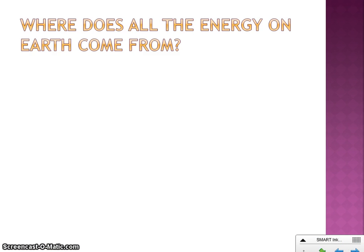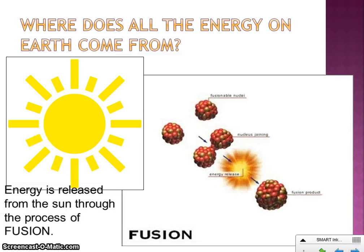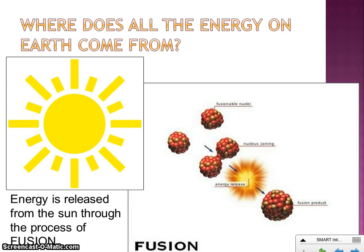We're going to talk a little bit about all this energy on Earth, starting off with where it comes from. In biology, you learned that all energy on Earth comes from the sun. And how does the sun get all of its energy? Well, the sun gets its energy through the process of fusion.